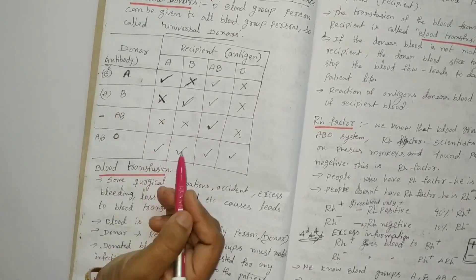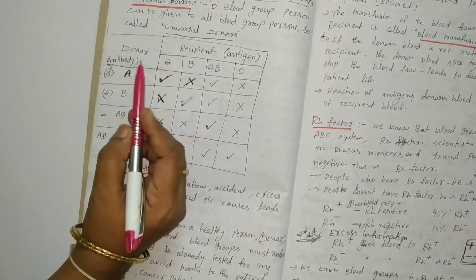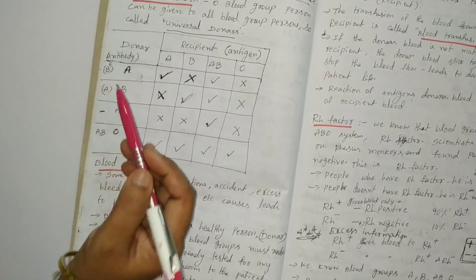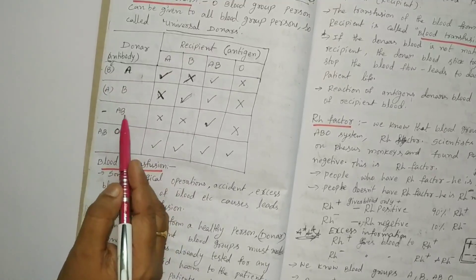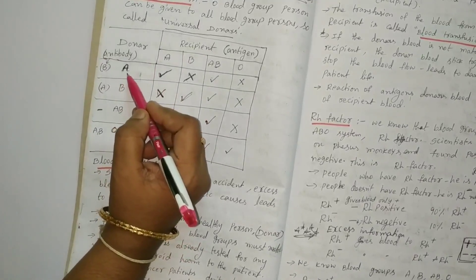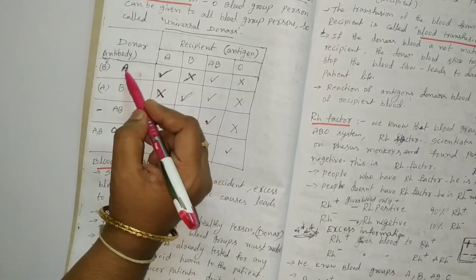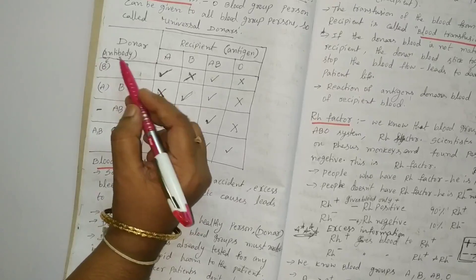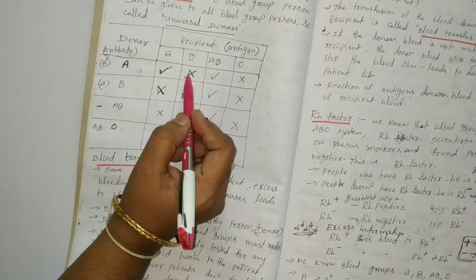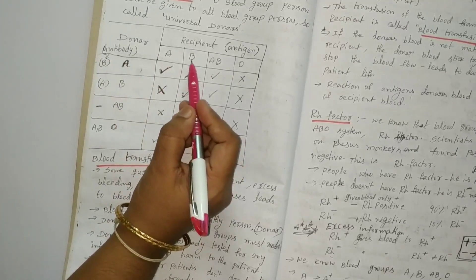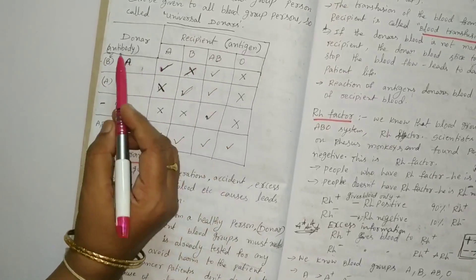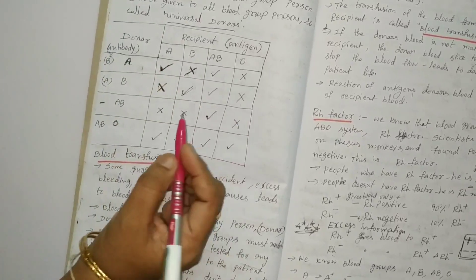Blood transfusion depends upon recipient antigen and recipient antibody. A blood group antibody is B; B blood group antibody is A; AB blood group antibody is nil; O blood group antibody is A and B. A blood group gives to A because the antibody is B — antigen and antibody are different, so it is matched. A blood group doesn't give to B because the antibody is B and the antigen is also B — same, so not matched.